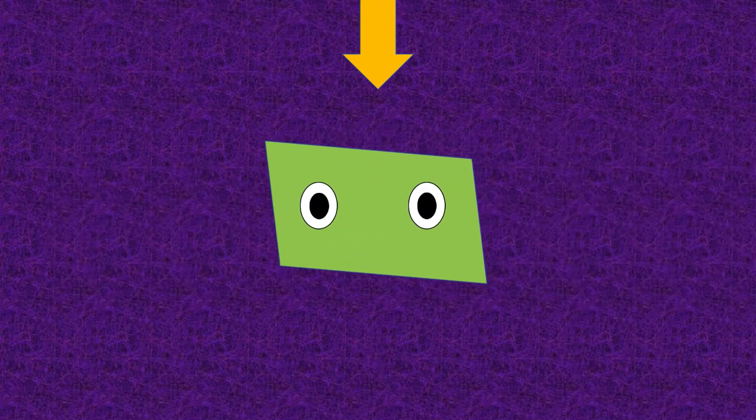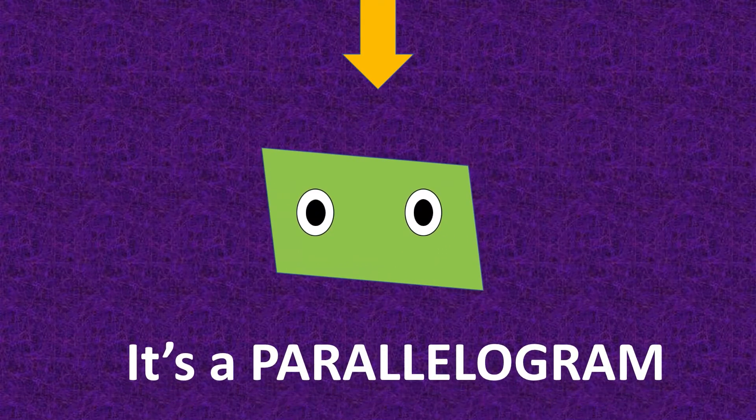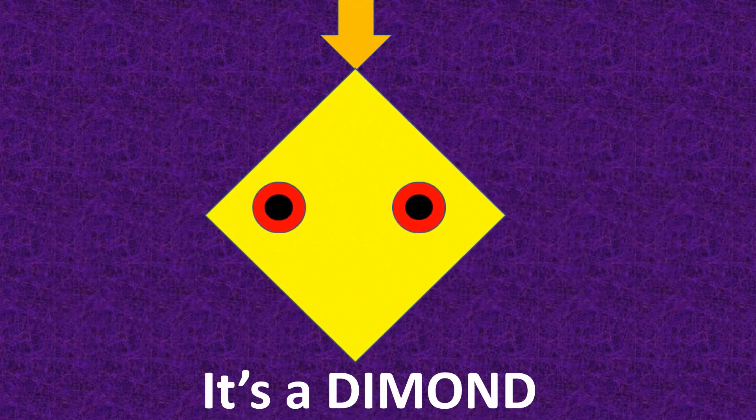What shape is it? It's a parallelogram. What shape is it? It's a diamond.